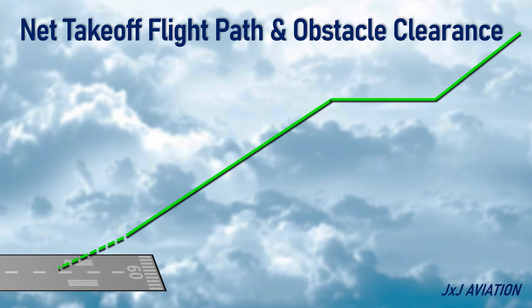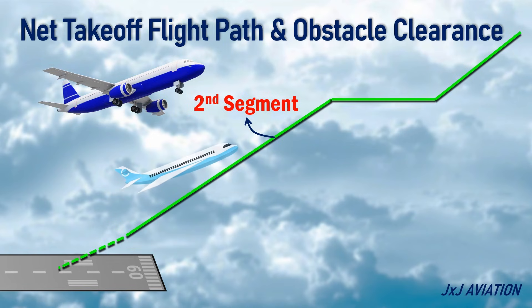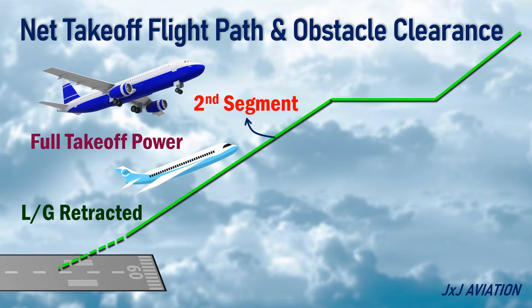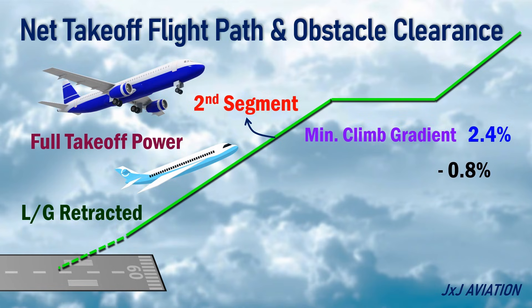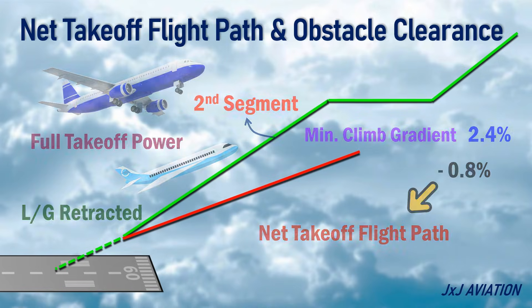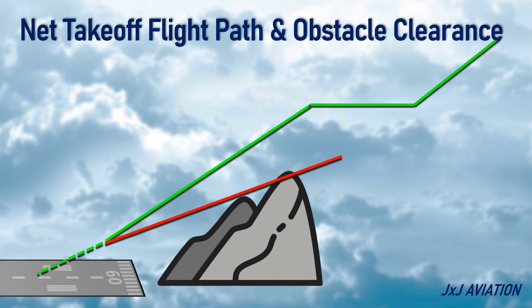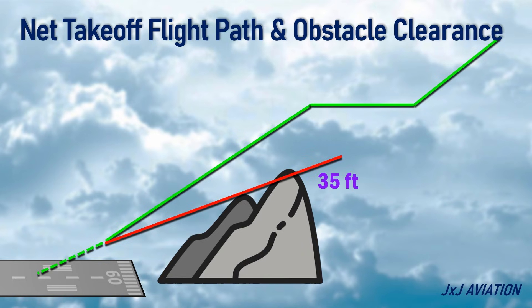Net takeoff flight path and obstacle clearance. To understand this, let's consider a two-engine aircraft in the second takeoff segment. This segment starts when the landing gear is fully retracted and the engine is at full takeoff power. Here, the minimum climb gradient to be maintained is 2.4%. When this climb gradient is reduced by 0.8%, we get the net takeoff flight path. As per regulations, the net takeoff flight path must clear any obstacle by at least 35 feet.